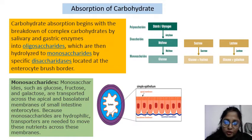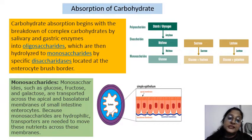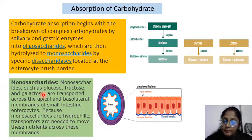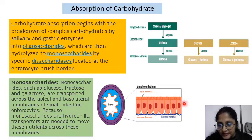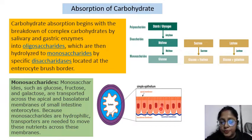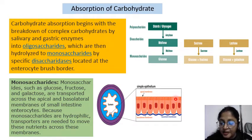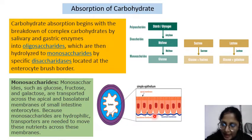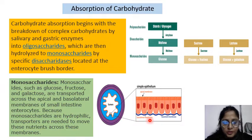There are two types of membranes of the small intestine enterocytes: one is the apical membrane and the other is the basolateral membrane. As you can see, this is a simple epithelium with a section shown here. We have two sides — one is the apical side with hair-like, finger-like projections, which is the apical membrane, and on the opposite side we have the basolateral membrane.